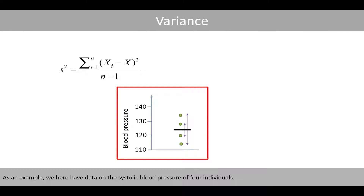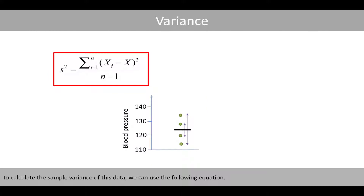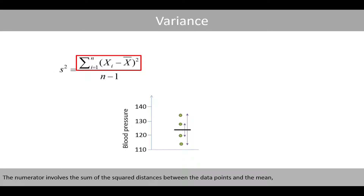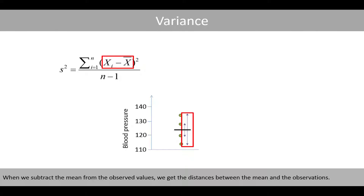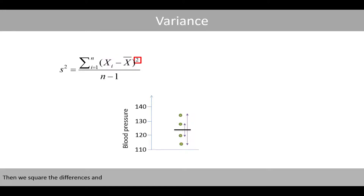As an example, we have data on the systolic blood pressure of four individuals. To calculate the sample variance of this data, we can use the following equation. The numerator involves the sum of square distances between the data points and the mean, where xi denotes the value of each observed systolic blood pressure and x-bar denotes the mean of those four data points. When we subtract the mean from the observed values, we get the distances between the mean and observations. Then we square the differences and sum up all those squared differences.